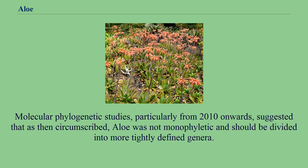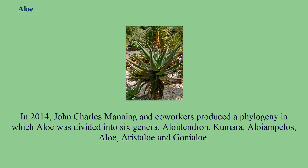Molecular phylogenetic studies, particularly from 2010 onwards, suggested that as then circumscribed, aloe was not monophyletic and should be divided into more tightly defined genera. In 2014, John Charles Manning and co-workers produced a phylogeny in which aloe was divided into six genera: Aloidendron, Kumara, Aloiampelos, Aloe, Aristaloe, and Gonialoe.